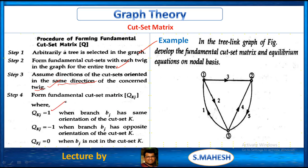Assume directions of the cut sets oriented in the same direction as that twig. Then form the fundamental cut set matrix. When the orientation is the same, we assign a value of 1. If the orientation is opposite, we assign minus 1. If there is no link connection, we get a value of 0.